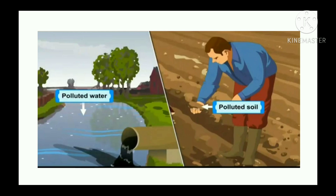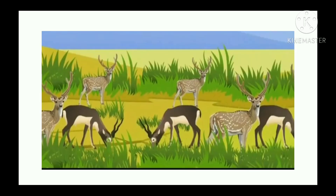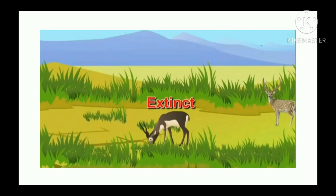Due to several such reasons, water and soil get polluted. This is dangerous for the plants and animals — their numbers reduce and eventually they die out altogether, becoming extinct, just as we have seen with the dodo bird and the Indian cheetah.